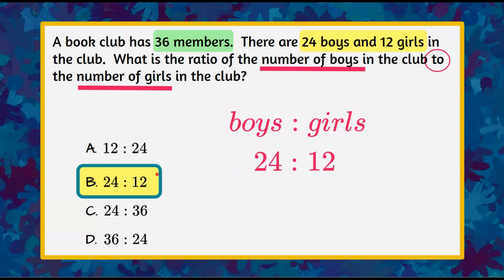So our answer choice is B. Boys to girls is 24 to 12. And there you have it.